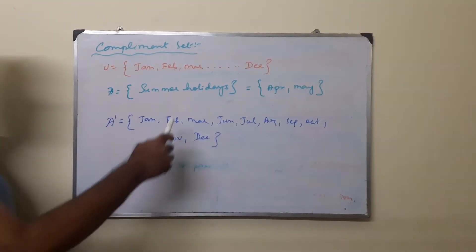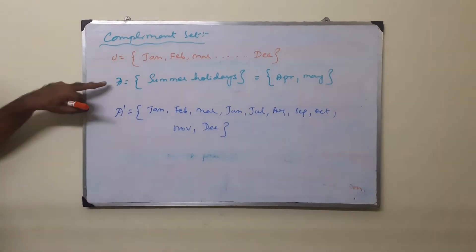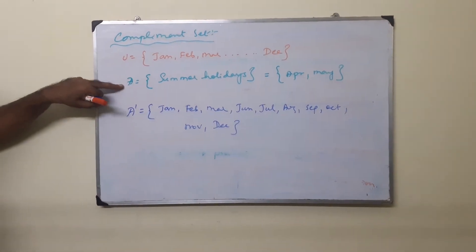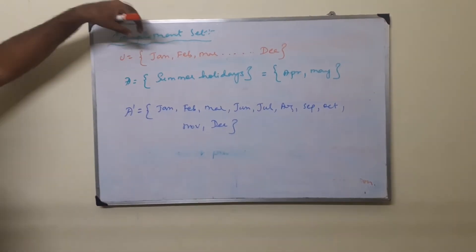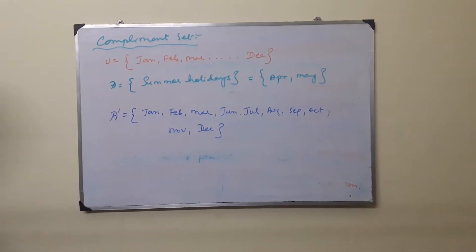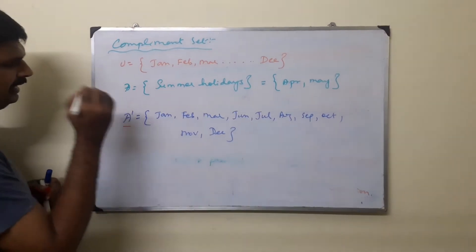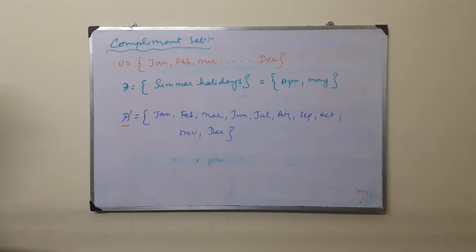The universal set is the set of months in one year. January is a subset of U. Summer holidays is April, May. So in the 12 months, summer holidays April, May, that is one set. Now this A is the universal set. Level element select A is the subset of U.